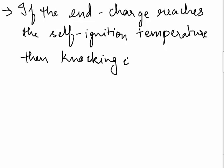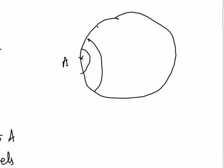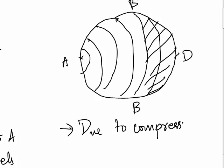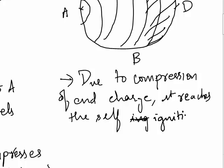Now let us look at how knocking occurs. Again we will consider the cylinder. We have a point A at this part. There is a flame front which travels. Now we will take the end charge as DB'D. Due to the compression of the end charge, it reaches the self-ignition temperature.